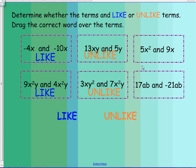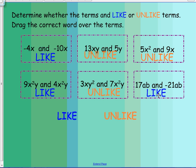We have 5x squared and 9x — if you said that was unlike terms, you are correct. And last but not least, we have 17ab and negative 21ab. Since they both have a and b to the first power, they are like terms.